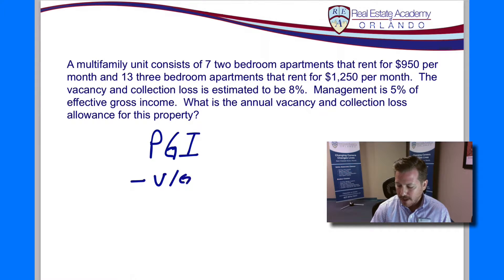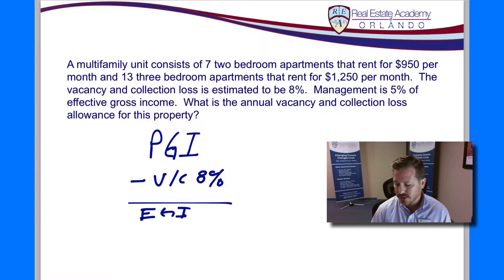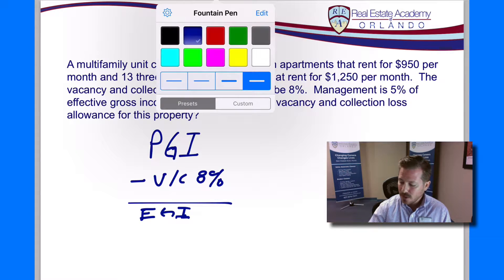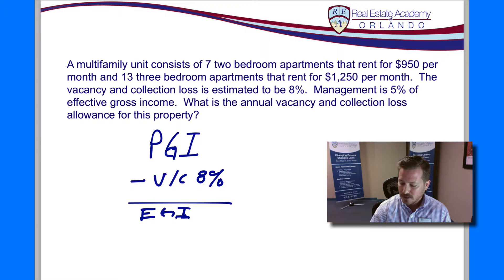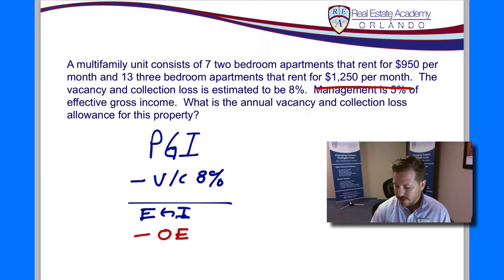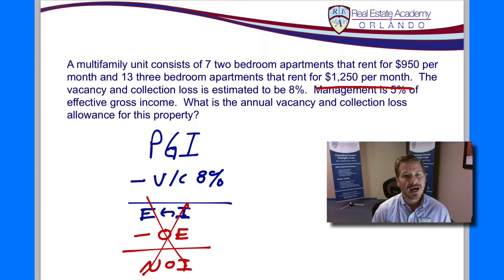We start with PGI, we back out our vacancy and collection — in this case it's going to be 8% — and that's going to leave us with our effective gross income. Now typically, we're going to calculate the vacancy and collection when we're looking to solve the effective gross income question. The question they've given us here, we're stopping at vacancy and collection rate, so it's relatively simple. Now when it comes to that management fee of 5%, we don't need that at all for this question — it's not relevant. That would ultimately be below the effective gross income if we're calculating operating expenses. So EGI minus our operating expenses equals our net operating income. But in this problem, all we're doing is calculating that vacancy and collection rate. They're just giving us a lot of information to try to confuse you.